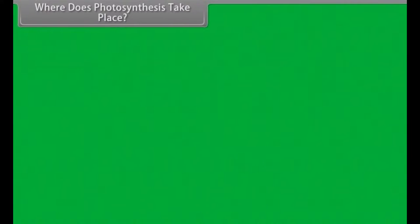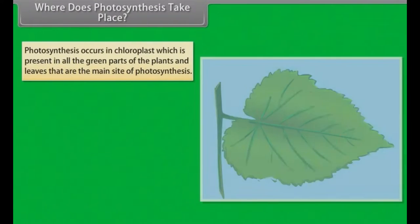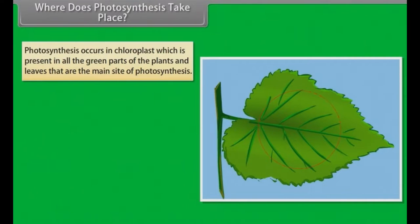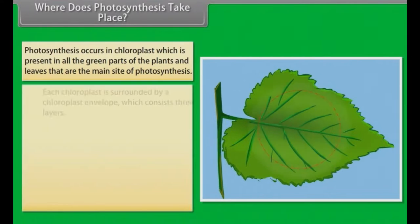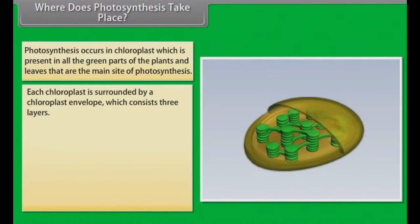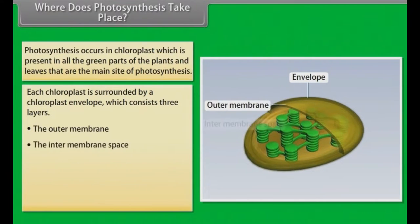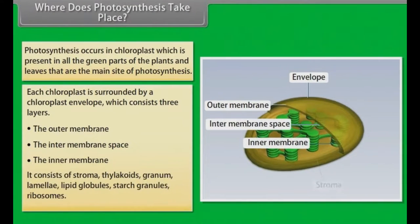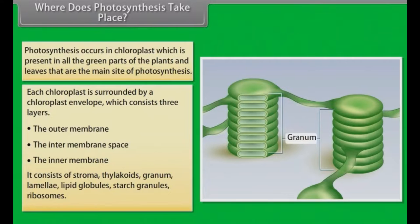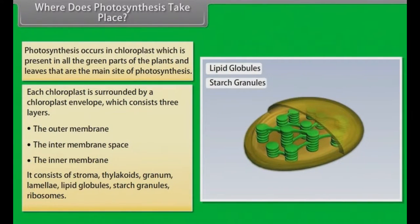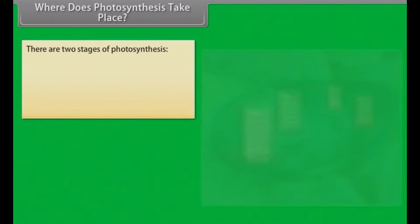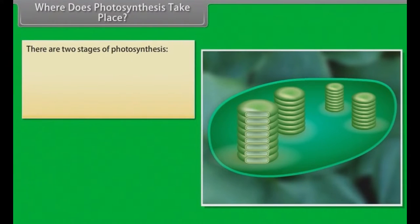Where does photosynthesis take place? Photosynthesis occurs in chloroplast which is present in all the green parts of the plants and leaves that are the main site of photosynthesis. Each chloroplast is surrounded by a chloroplast envelope which consists of three layers. It consists of stroma, thylakoids, granum, lamellae, lipid globules, starch granules, and ribosomes. There are two stages of photosynthesis. The first stage is light reaction and the second stage is dark reaction.